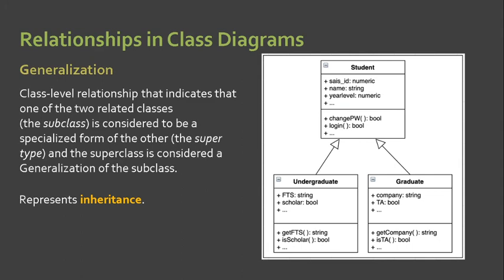Let's talk about generalization, which is the last relationship in class diagrams. In generalization, one element is a specialization of another general component — it is called a parent-child relationship. In our example, Undergrad and Graduate are subclasses of the Student class, so the Student is our parent and Undergrad and Graduate are the children. This is considered a specialized form of the supertype or superclass.